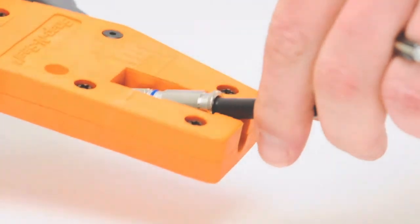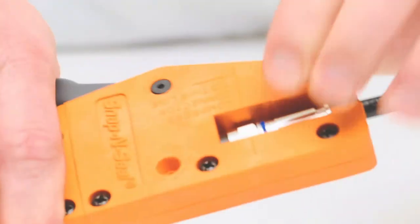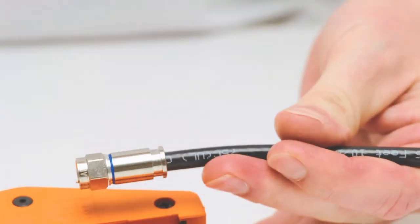Next insert it into the IT-1000 tool and push down on the handle. This compresses the connector and creates a secure connection.